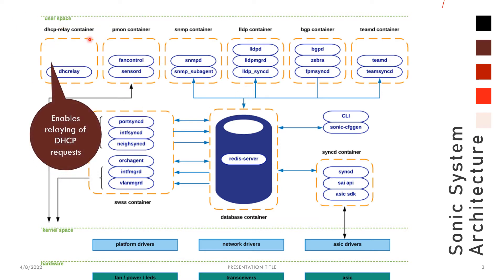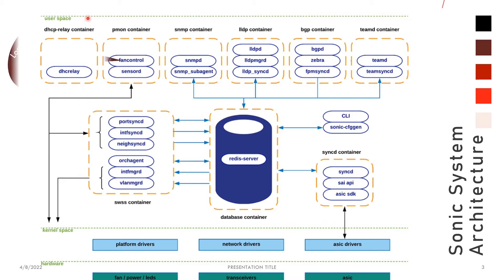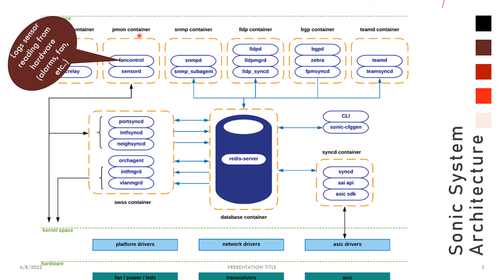In the DHCP relay container, it enables relaying of the DHCP request — that is the main operation of the DHCP relay. Next is the PMON container. PMON probes the hardware for details and gets the sensor logs for reading — for example, alarms, fan, and everything like that. That is the main functionality of the PMON container.